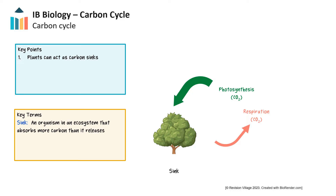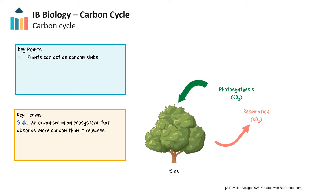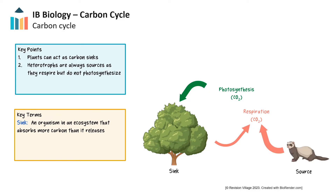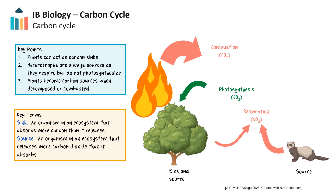Plants often absorb more carbon through photosynthesis than they release through respiration. A sink is an organism or ecosystem that absorbs more carbon than it releases. Plants act as a sink when more carbon dioxide is stored than released. When plants grow and build tissues, carbon dioxide is removed from the atmosphere. As plants reach maturity and their growth slows, their net absorption of carbon dioxide decreases. Heterotrophs, which rely on consuming organic matter, are always sources of carbon dioxide as they respire and do not photosynthesize. A source is an organism that releases more carbon dioxide than it absorbs. During the process of decomposition or combustion, plants and other organisms are sources of carbon dioxide.